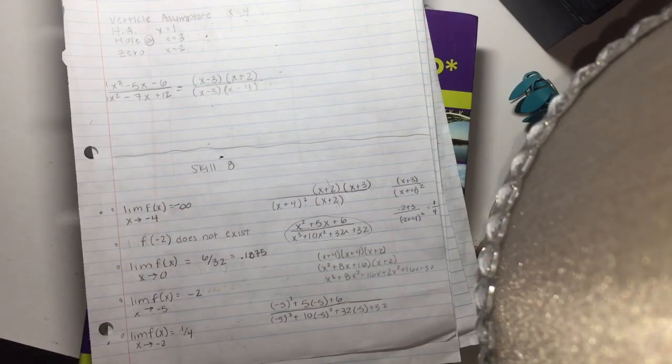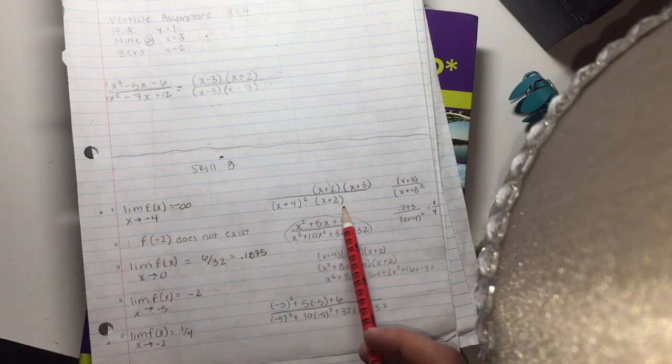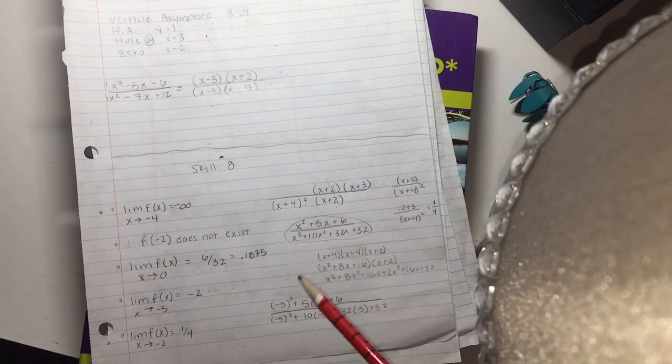Okay, so we know that f at negative 2 does not exist because they cancel each other out. So that's going to be a hole.